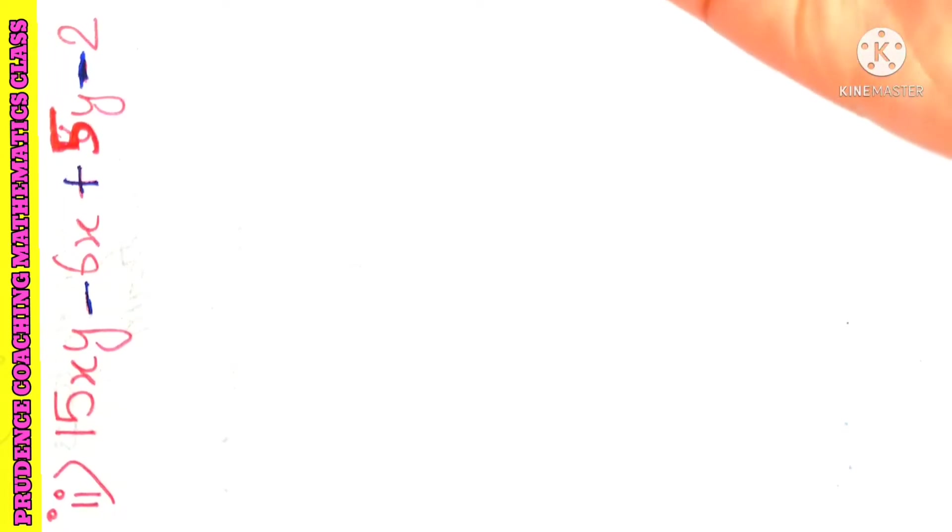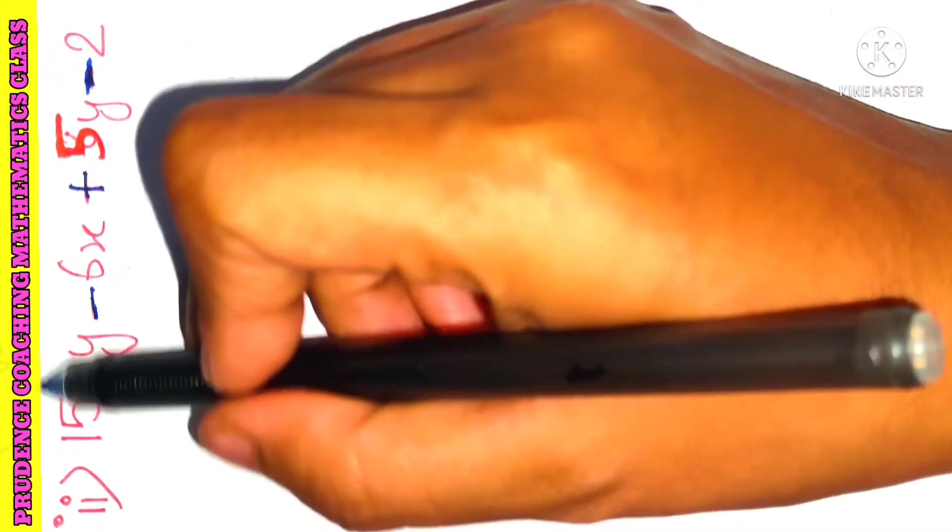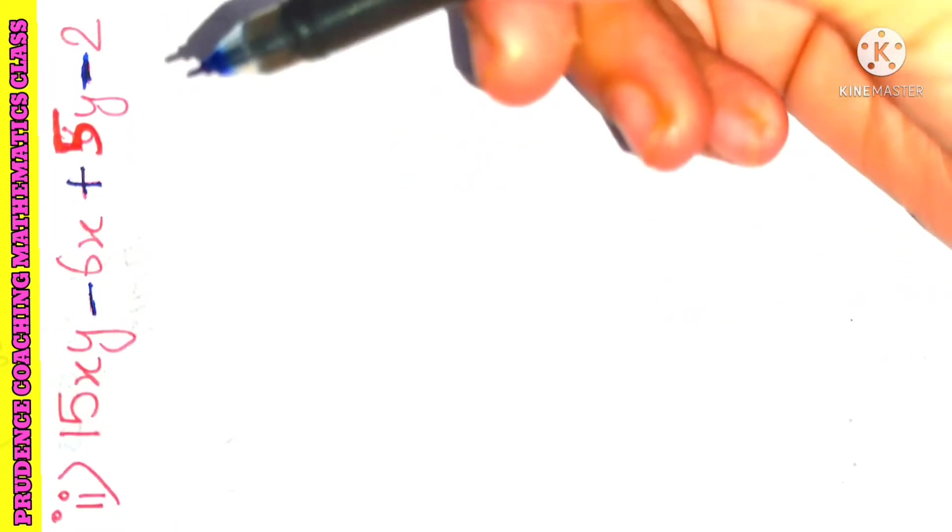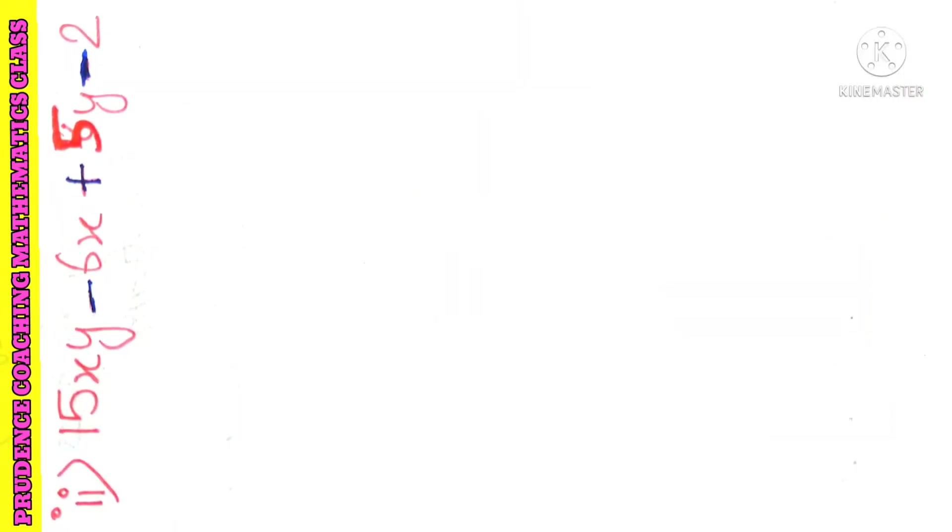So now let's start with sum number 2. Here we have 4 terms. This one, this one, this one, and this one, as plus and minus are the separators. So here we have 4 terms.